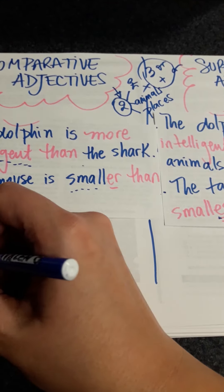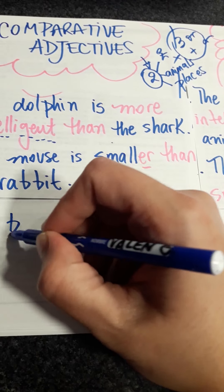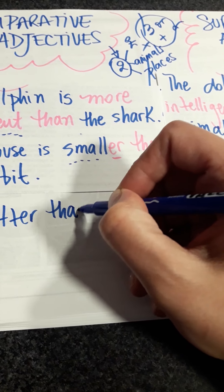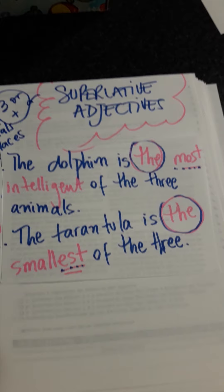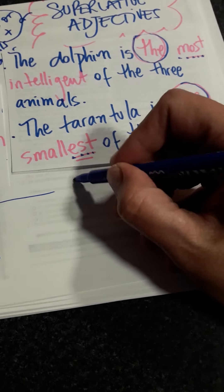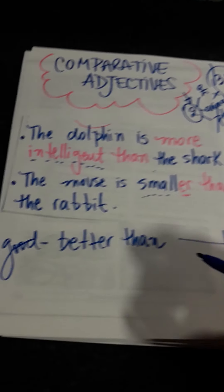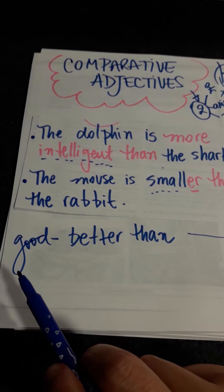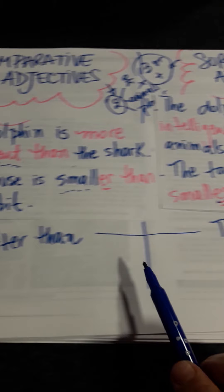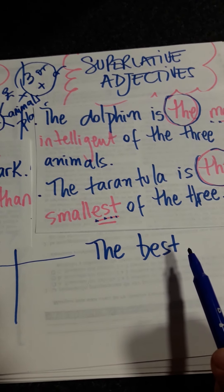One exception is 'good'. The comparative form of 'good' is 'better than', and the superlative form of 'good' is 'the best'. So, you can say that Messi is better than Tevez, but you can say that Maradona was the best.